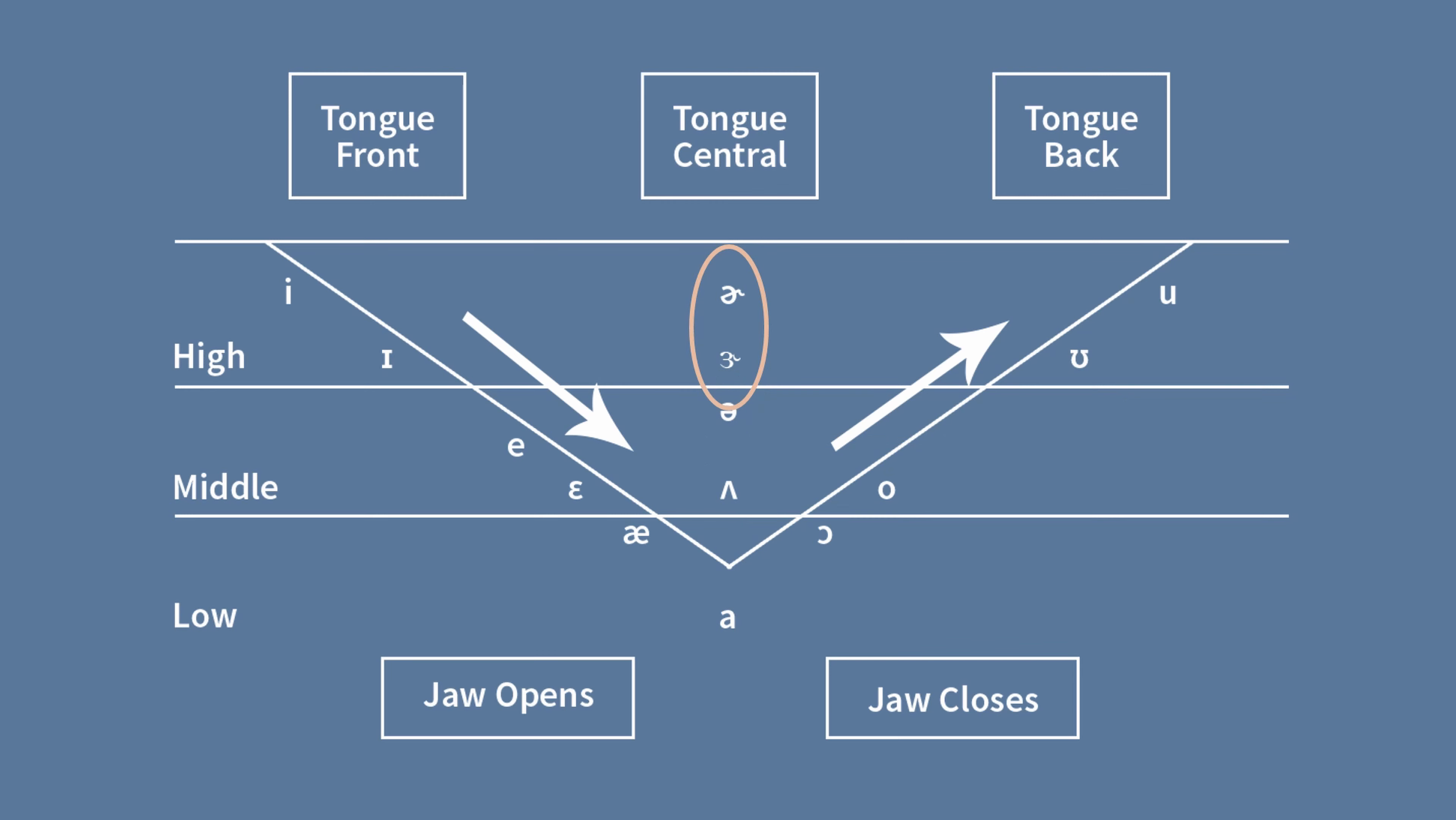These two symbols on the other hand are schwa sounds that have an R sound. The first symbol is accented while the second is unaccented. Again, they have a similar sound which sounds like ur.